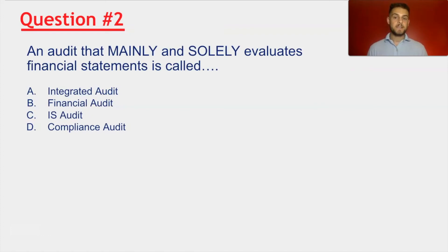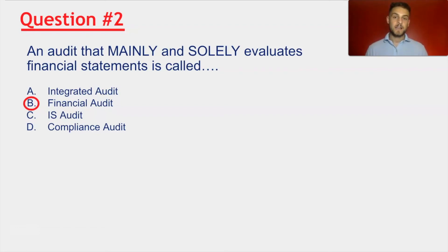Question number two: an audit that mainly and solely evaluates financial statements is called — B is the correct answer — financial audit. This is because a financial audit's main specialization is to look at financial statements. An integrated audit may have been a decent answer, but not quite the best because it is normally combining a financial audit with another type of audit. An IS audit and compliance audit are also incorrect because they look specifically into their respective categories — IS audit typically deals with information systems, and a compliance audit normally includes standards and laws.